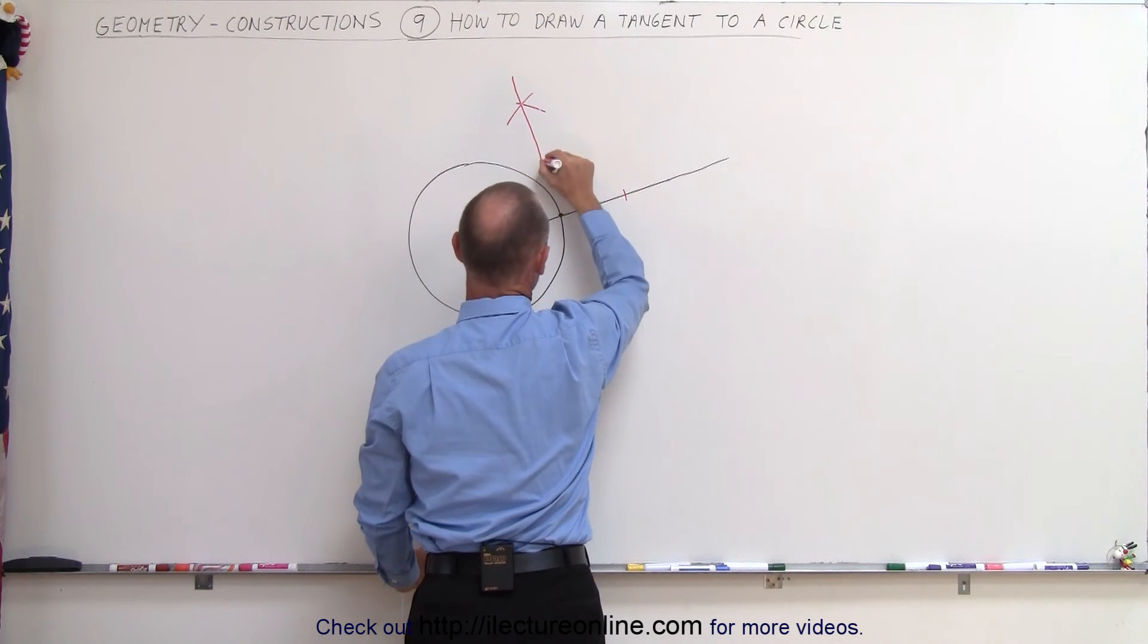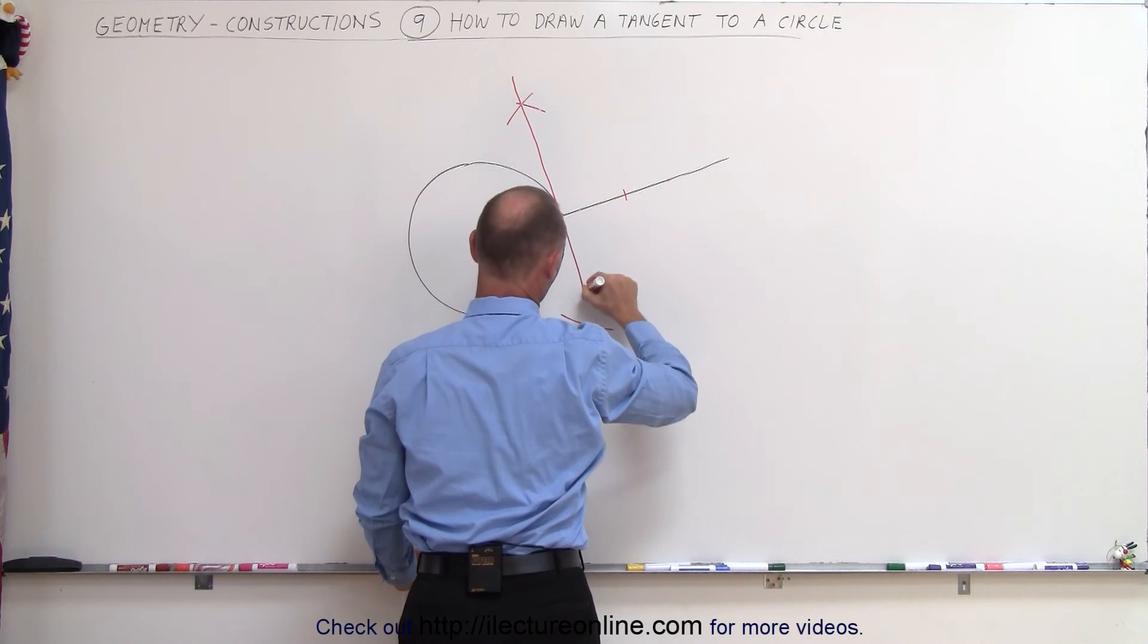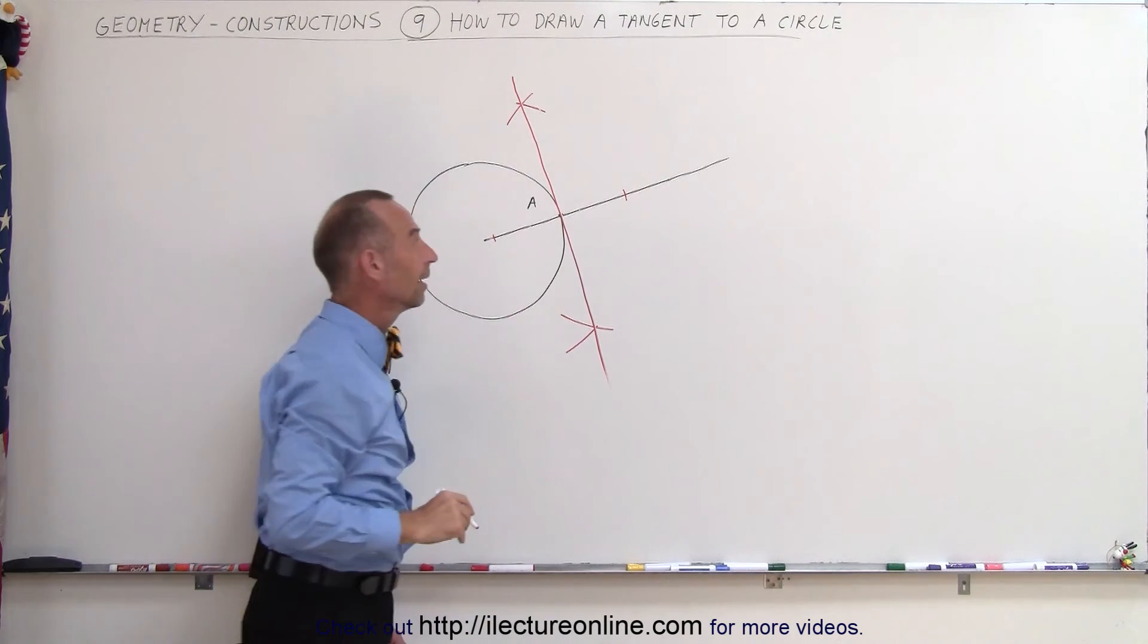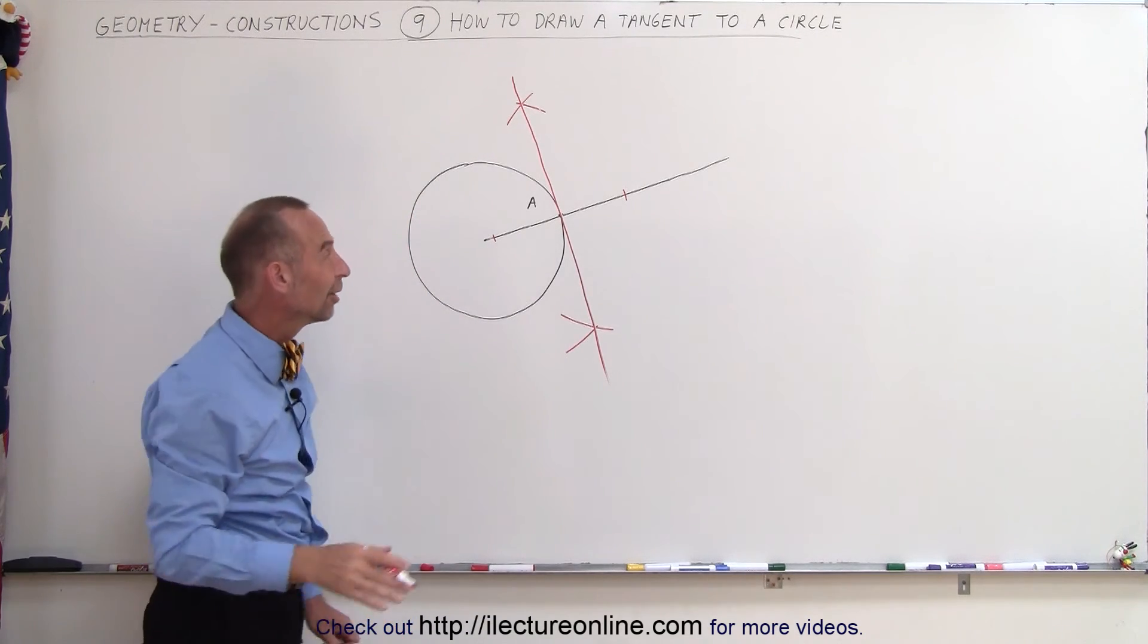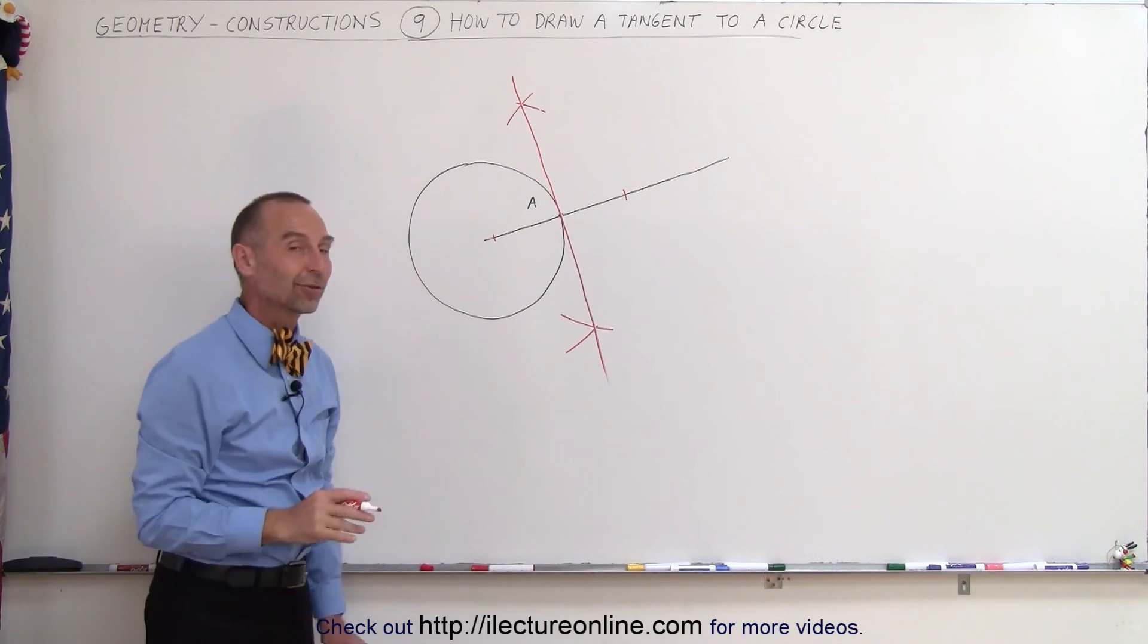Just like that. There we go. And that's how we draw a tangent line to a circle at any point on the circle.